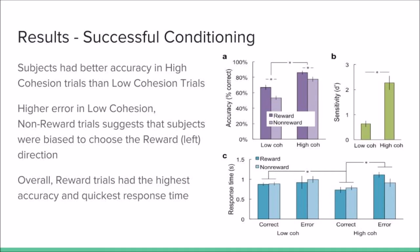This is determined through the higher error in non-reward, low cohesion trials. Overall, trials that gave the participant a reward yielded better response times and better accuracy.